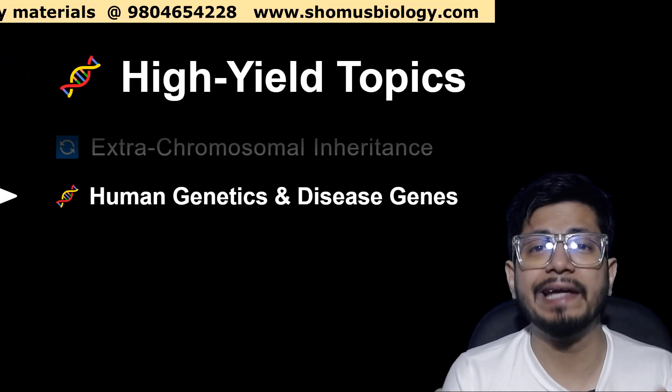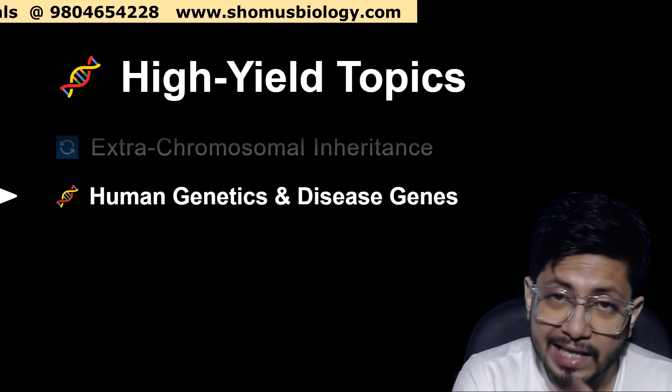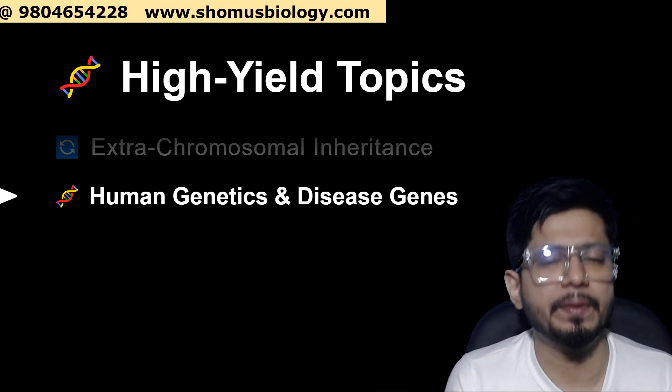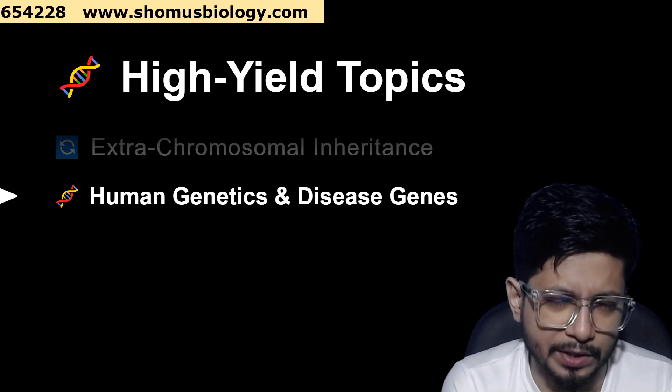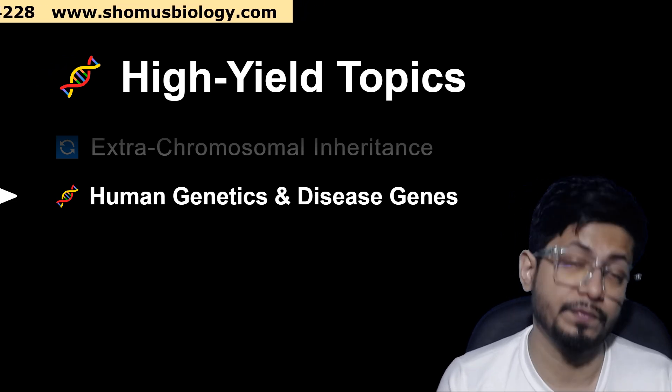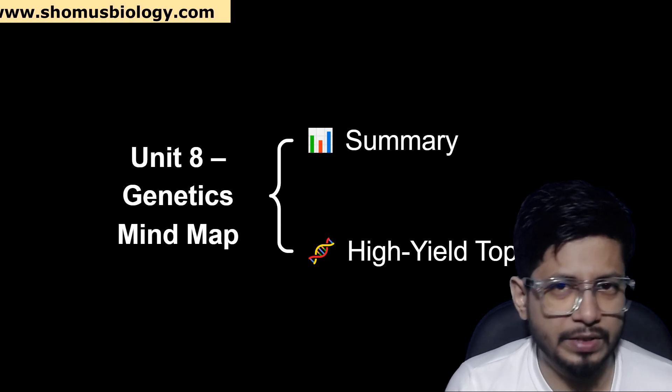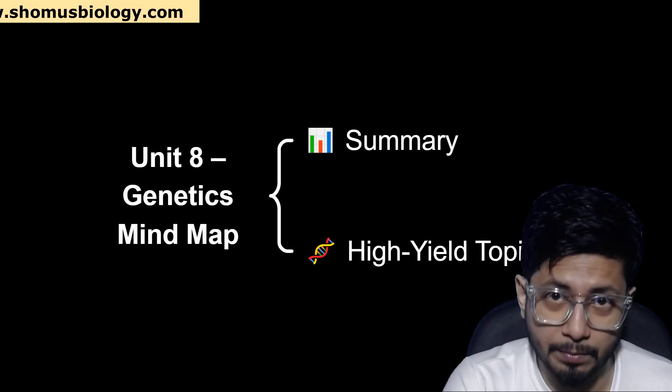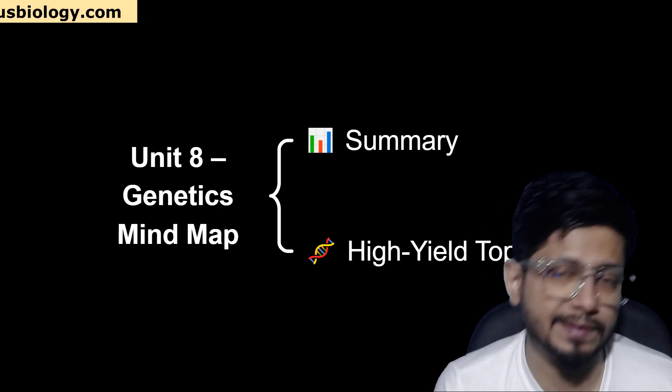So these are all high yield topics from the genetics chapter of CSI Net LSBT syllabus, and you can prepare these topics. If you prepare these topics, you are going to see repeated questions in the examination only from these topics. If you want to prepare suggestively, then prepare these topics. So we have concluded our overall summary and high yield topics from genetics or unit 8 of CSI Net LSBT syllabus.